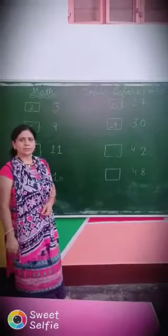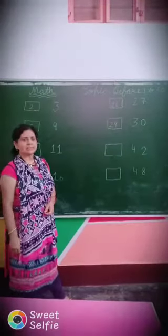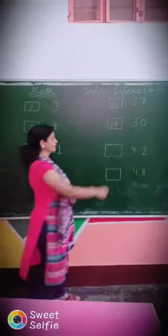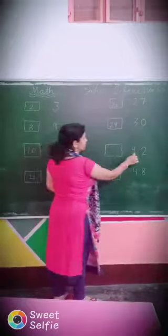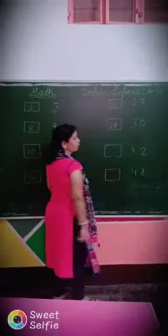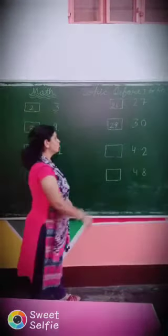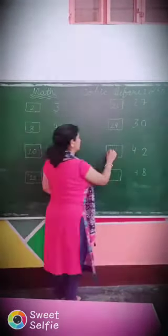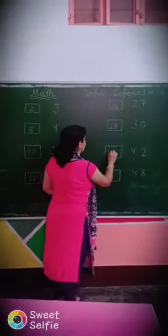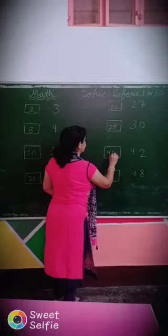Understood, students? Next digit is 4, 2 — 42. The backward digit of 42 is 4, 1 — 41.